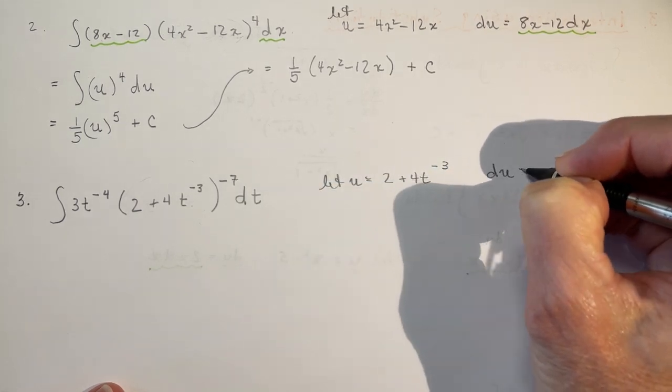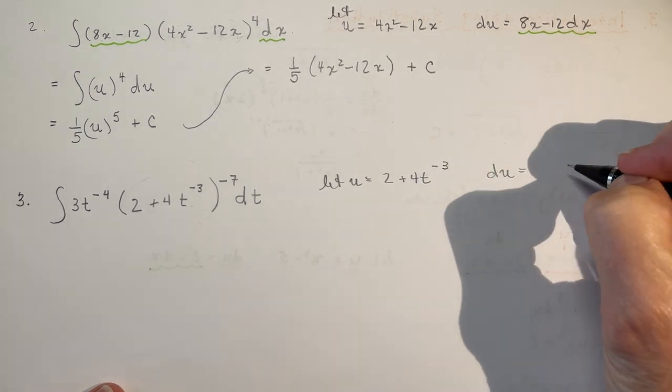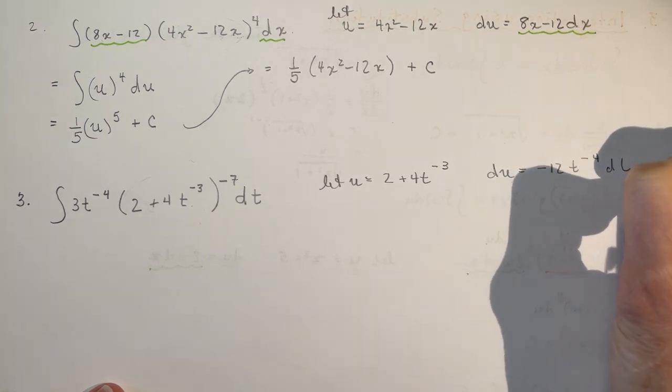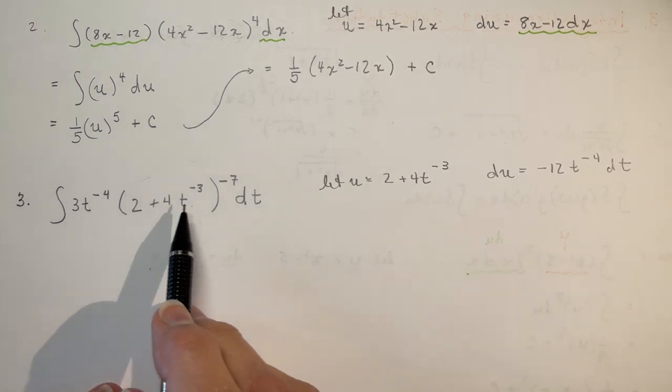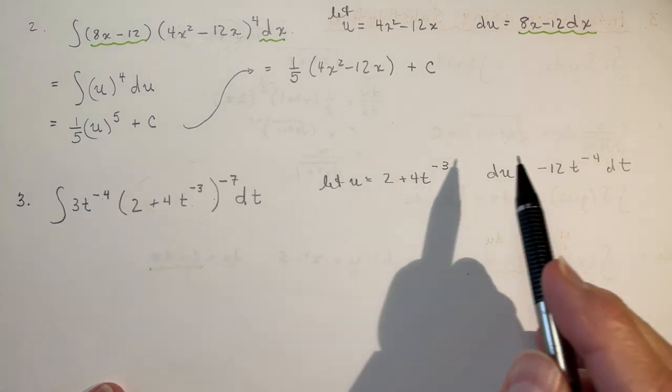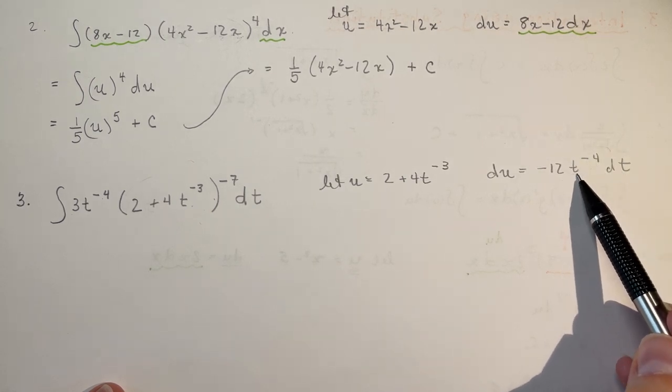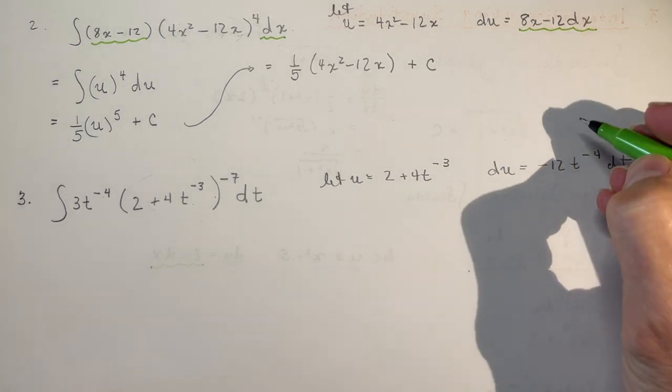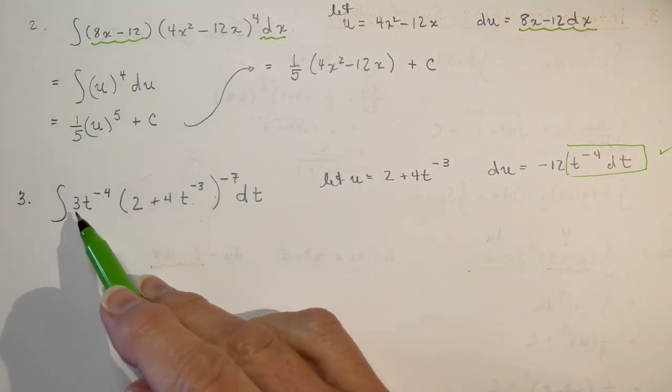So, I'm going to say, let u equal 2 plus 4t to the minus 3. Then, du is going to be equal to, the derivative of 2 is 0, and the derivative of 4t to the minus 3 is minus 12t to the minus 4 dt. This time we had t's, not x's. So that's fine, except I have 3t to the minus 4 dt. And I have minus 12t to the minus 4 dt. So, all is good with the exponent here. All this part here, the t to the minus 4 dt, this is all good. But the problem is that we need a positive 3.